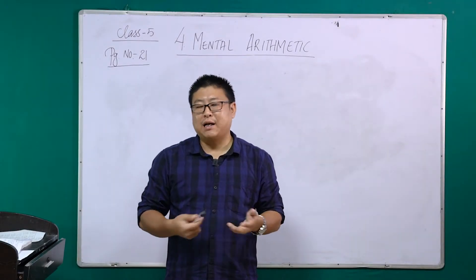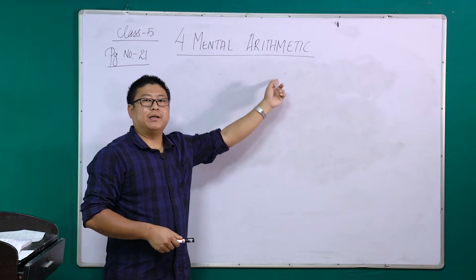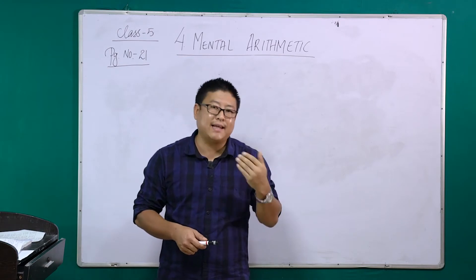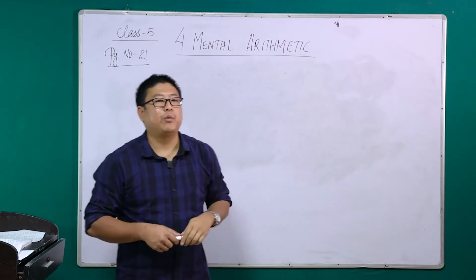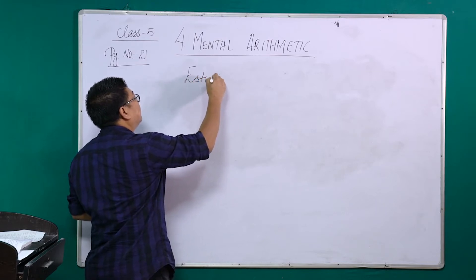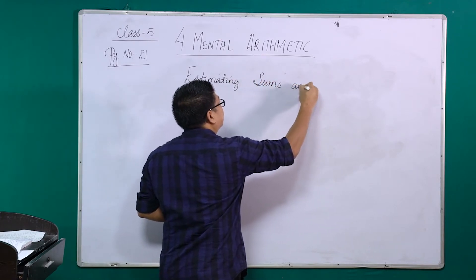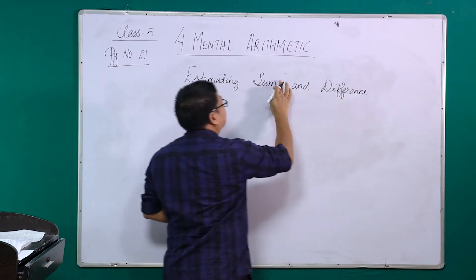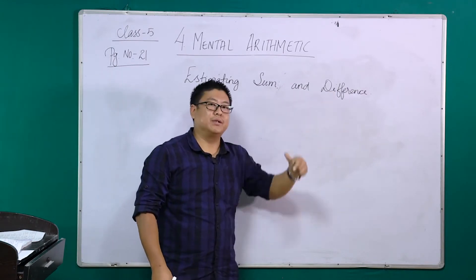Hello, dear students, and welcome back to the second class on Chapter 4, Mental Arithmetic. In the previous class, we have seen about estimating the numbers to the nearest tens, to the nearest hundreds, and to the nearest thousands. The next topic that we are going to learn today is estimating sums and differences.